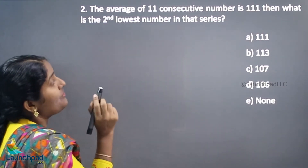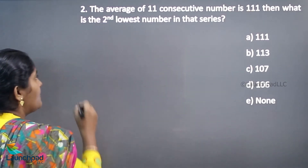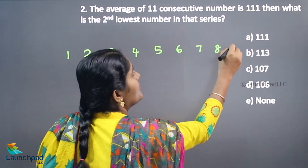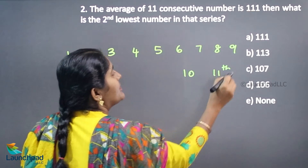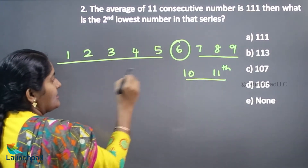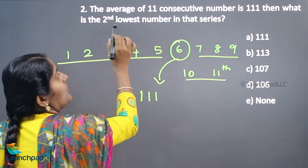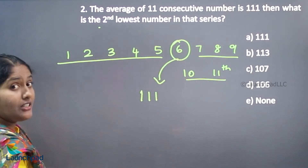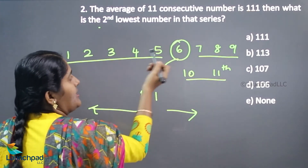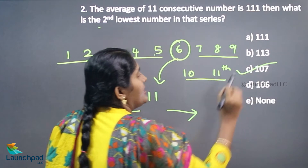Moving to the next question: the average of 11 consecutive numbers is 311. With 11 terms, the middle term is the 6th term, so the 6th term equals 311. The second lowest number is found by going backward: 310, 109... going back from 311 gives 110, 109, 108, 107. So 107 is your answer. Option C is correct.